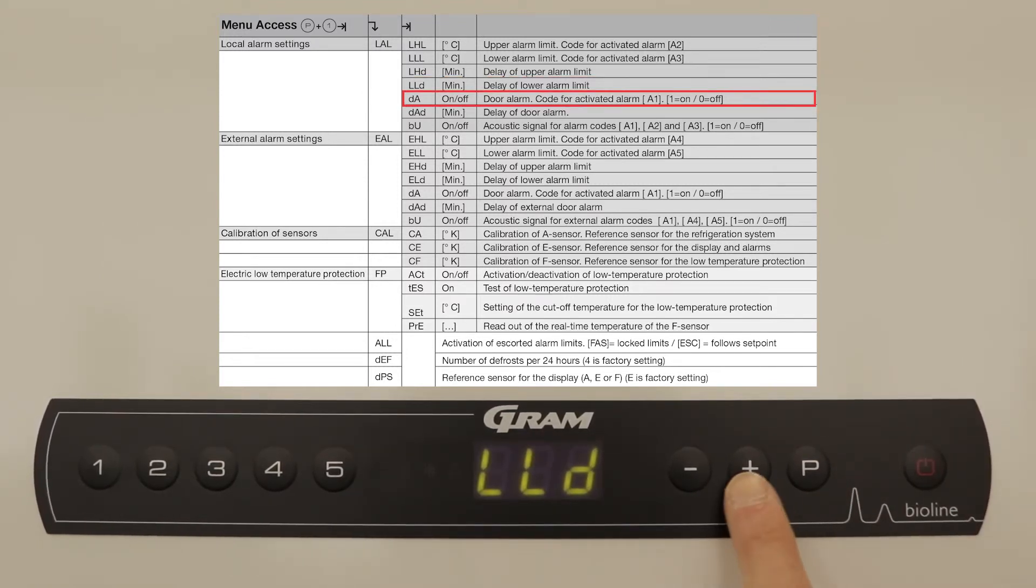We will now move to door alarm. This provides you with 2 options, 0 and 1. 0 being off, 1 being on. We will set this to 1.